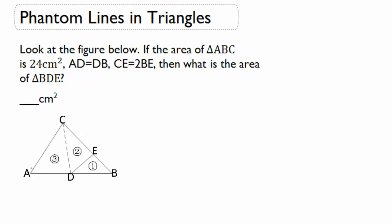All right, the first thing that we need to know here is that the total area of ABC is equal to 24 centimeters squared. They gave us that.